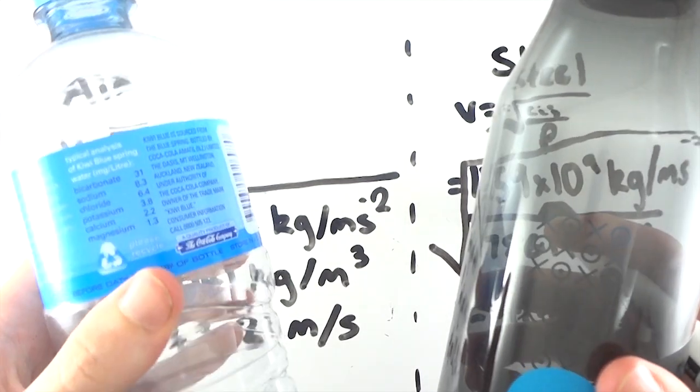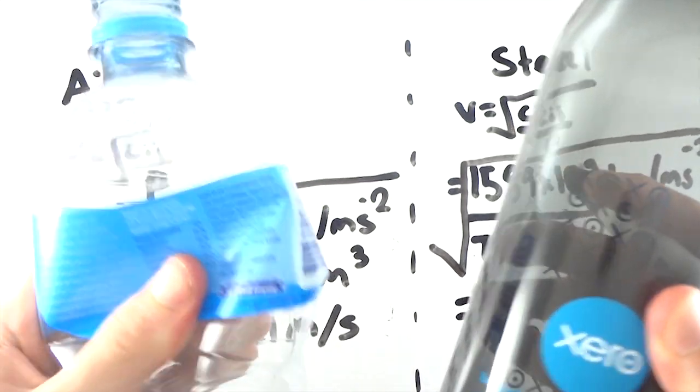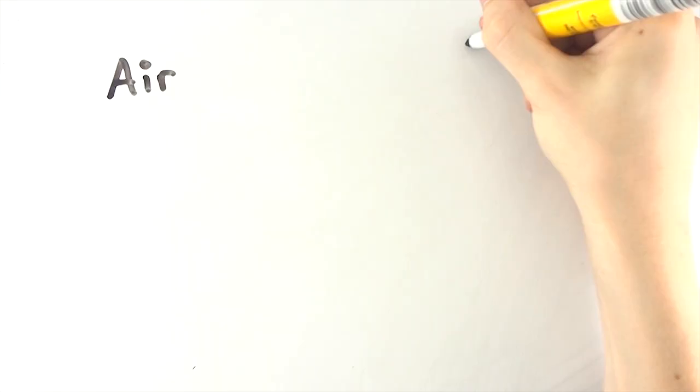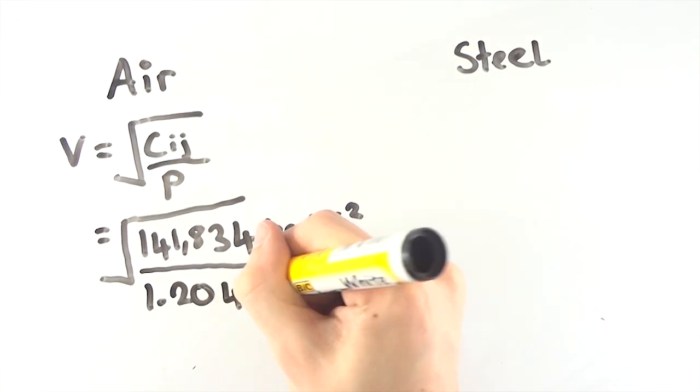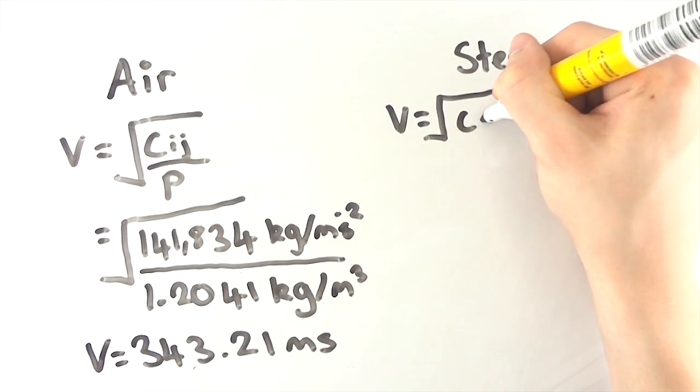At the particle level, rigid materials have molecules with stronger forces of attraction for each other. The greater the elastic properties and the lower the density of the medium, the faster sound will travel through that medium.